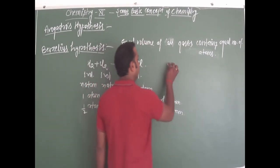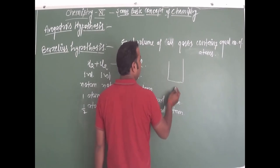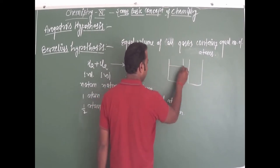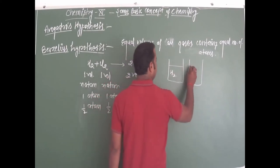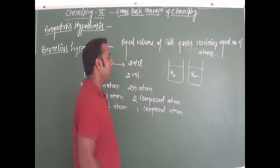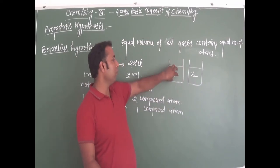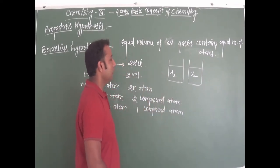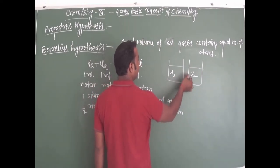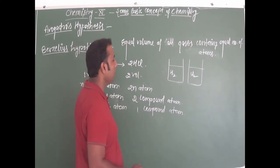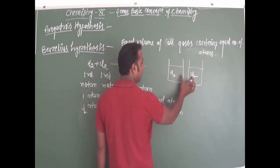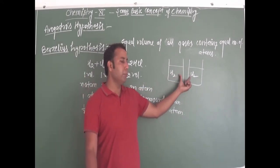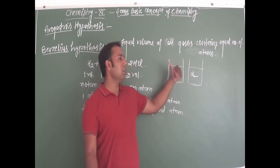This means that if we have one container and we have taken a second container also, and the volume of both containers are the same — in one container we have taken H2, hydrogen gas, and in the second container we have taken Cl2 — because the volume of hydrogen gas and the volume of chlorine are both the same, Berzelius hypothesis says the number of atoms present in these two containers having the same volume will be the same number of atoms.